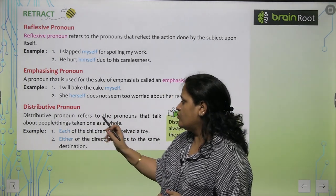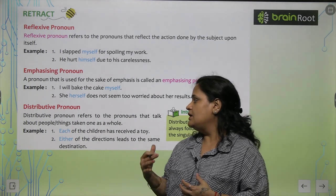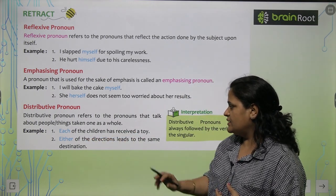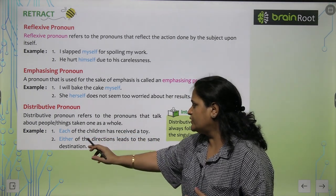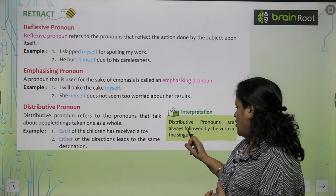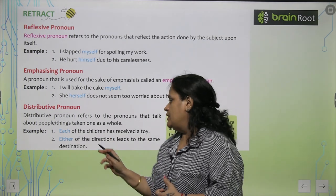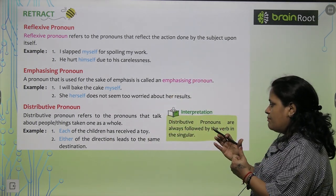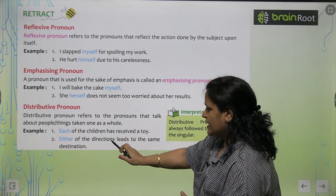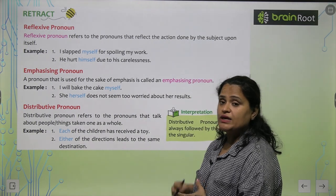Next is distributive pronoun. Distributive pronoun refers to the pronoun that talks about people or things taken one at a time or as a whole. For example: 'Each of the children has received the toy.' 'Either of the directions leads to the same destination.' Distributive pronouns are always followed by the verb in the singular — like 'leads,' 'has.' Each of the directions leads. Each of the children has. So always singular is used.